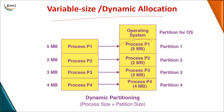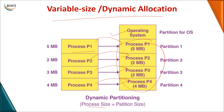In variable-size or dynamic allocation, the memory is not pre-partitioned. Instead, partitions are created dynamically based on process size. For example, if process P1 is 5 MB, 5 MB is allocated; P2 gets 2 MB, P3 gets 3 MB, and so on. Initially, there is no internal fragmentation because the partition size equals the process size.